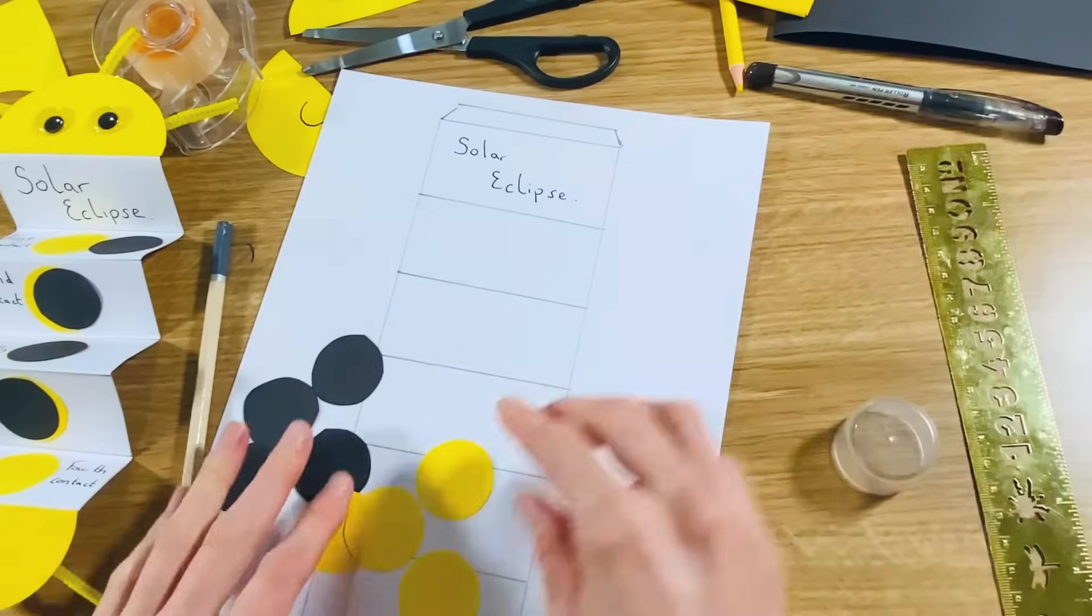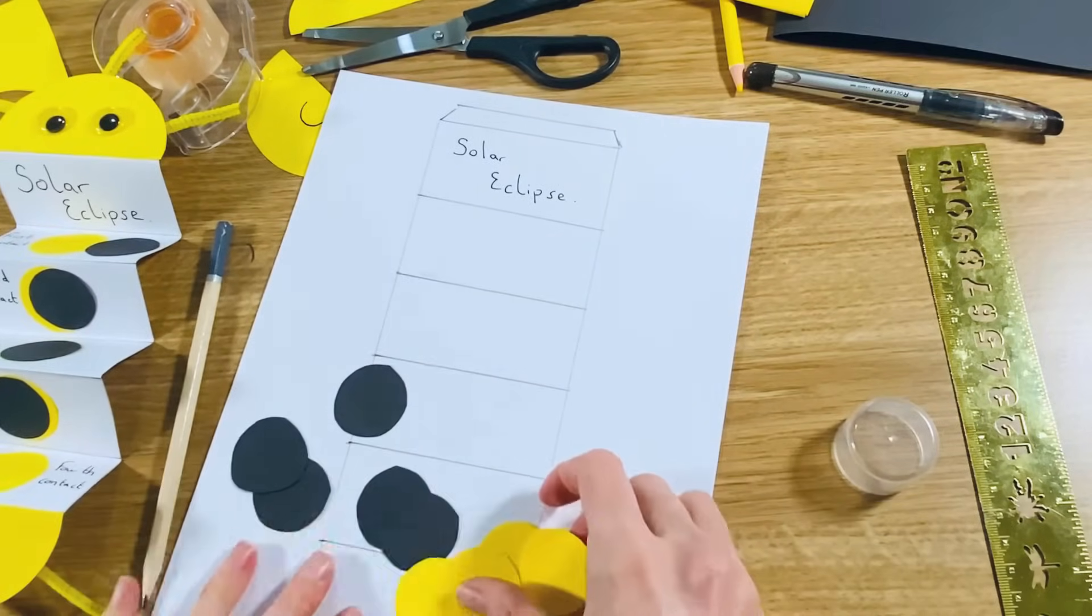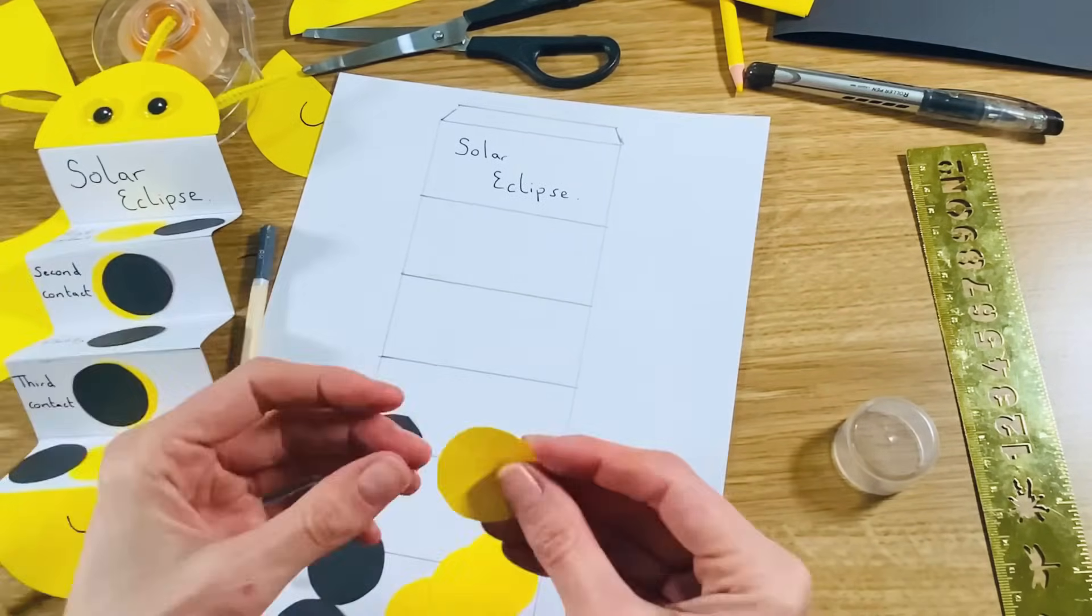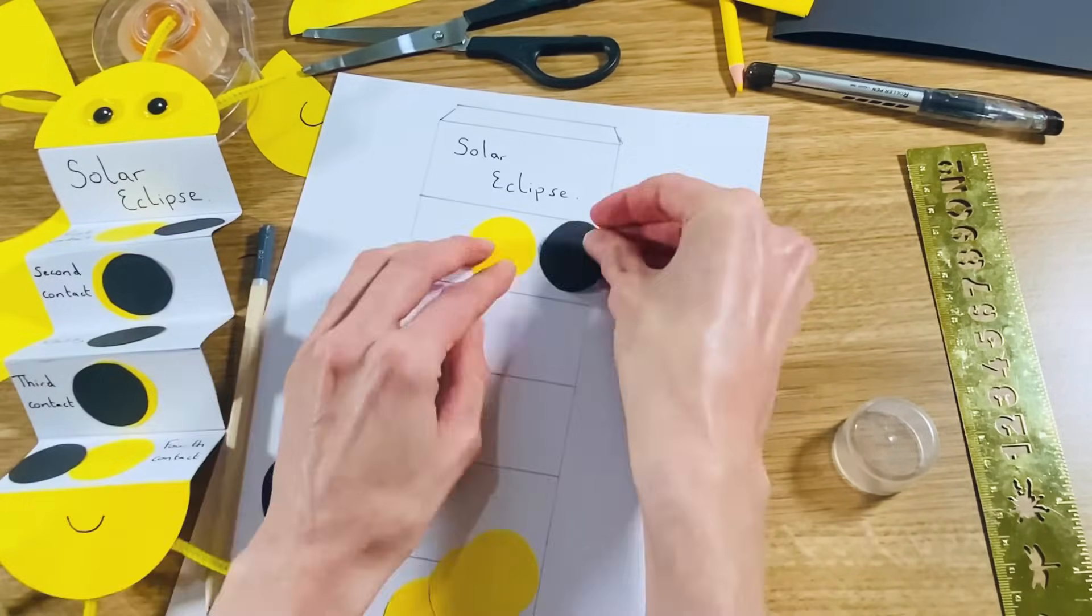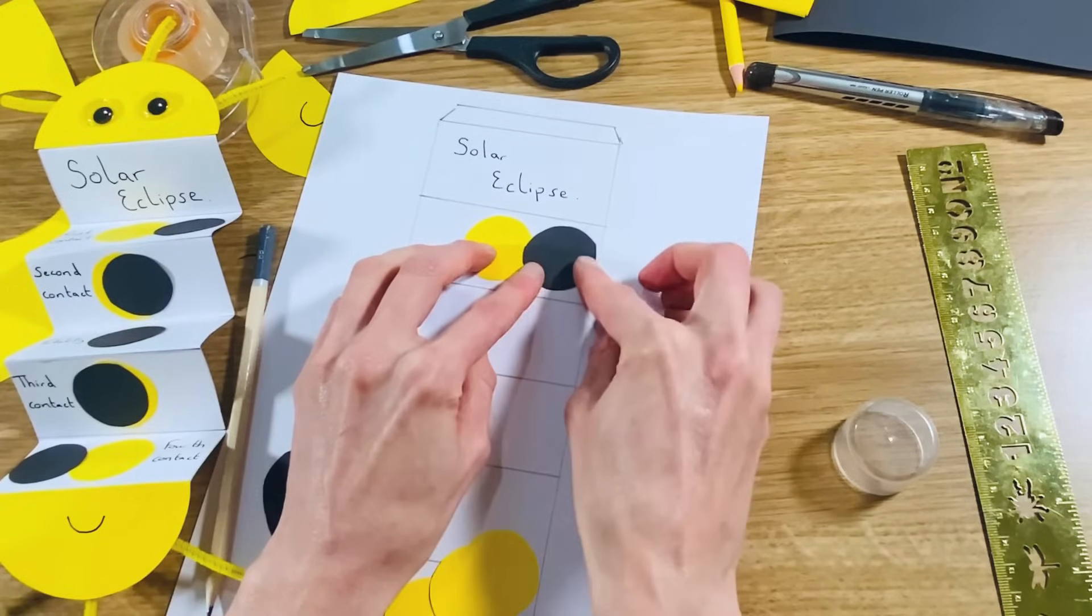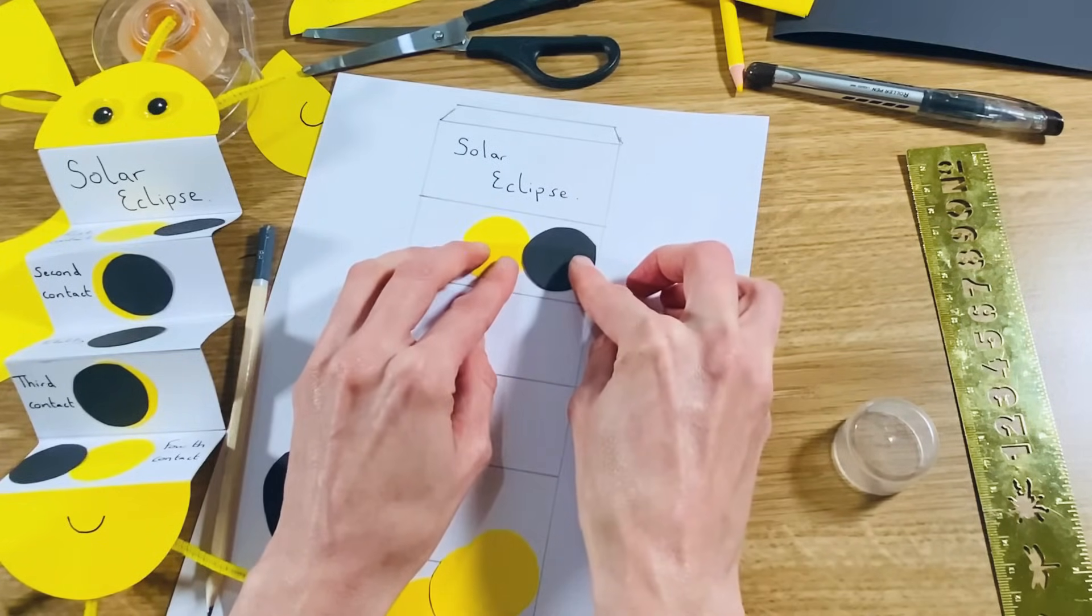And then I'm going to use the five boxes below to arrange my suns and moons. So the first stage of the solar eclipse, I'm going to put the sun in the middle there, and then the moon just starting to overlap so they're just touching.